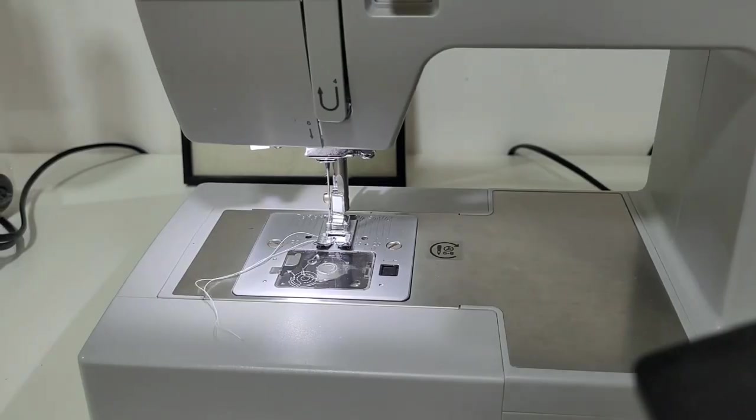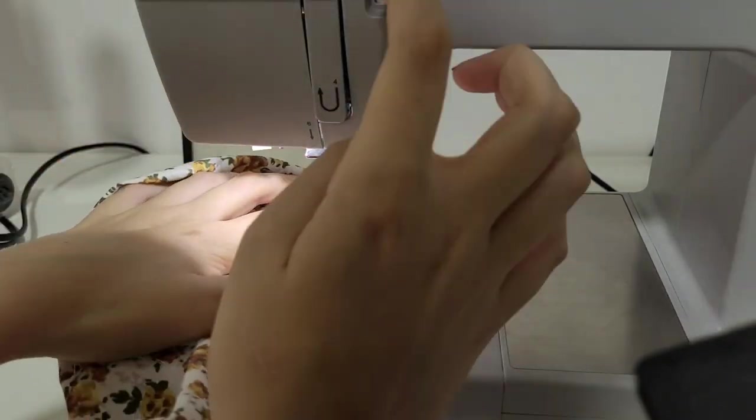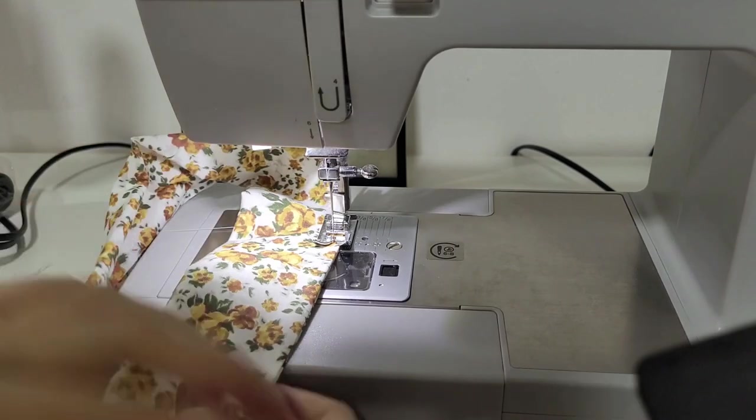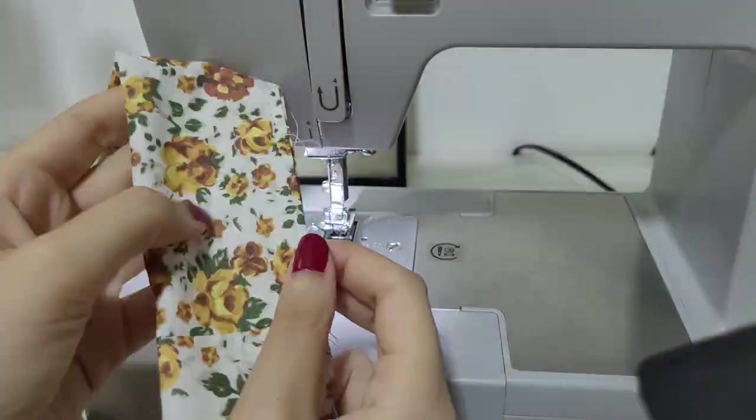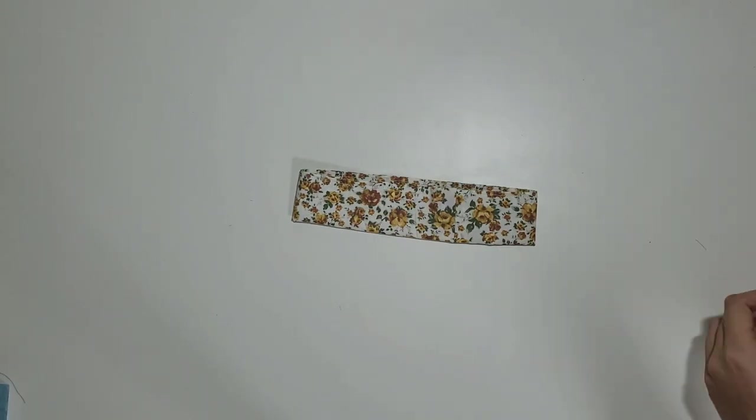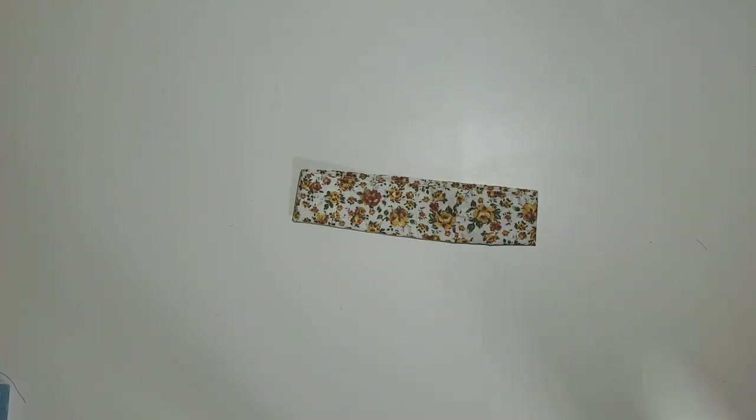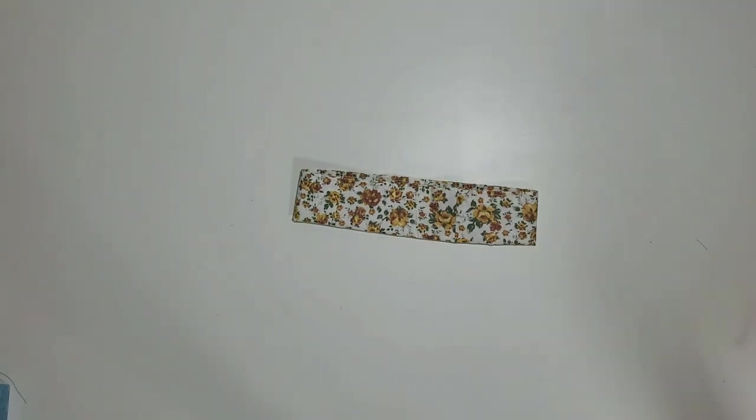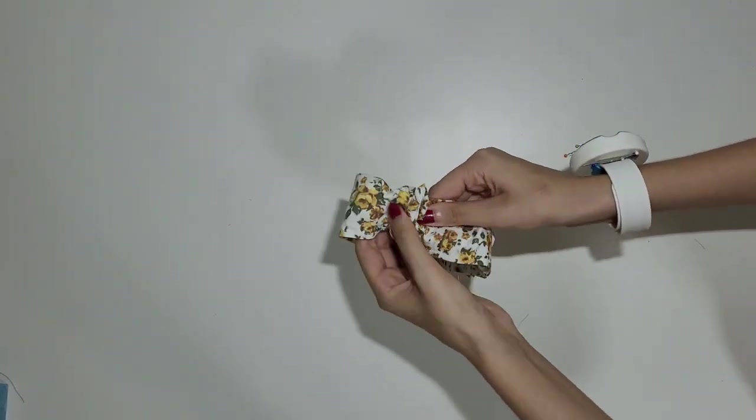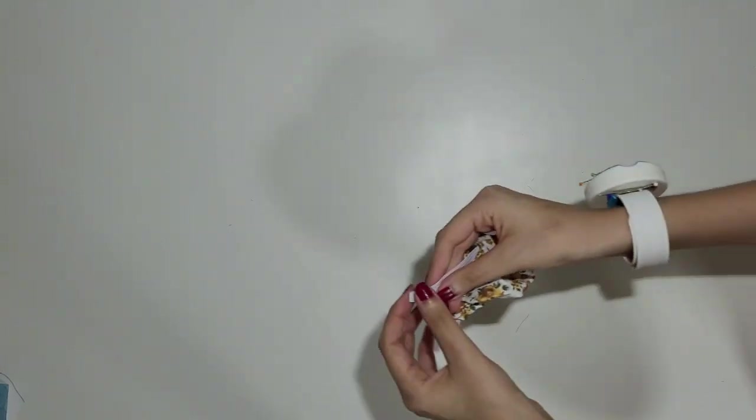Then topstitch around the edge, leaving a gap to insert the elastic. Use a safety pin or a clip to put the elastic inside. Then you can sew it or tie a knot.